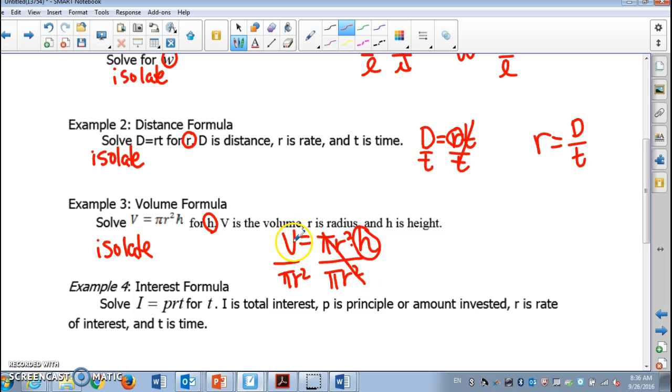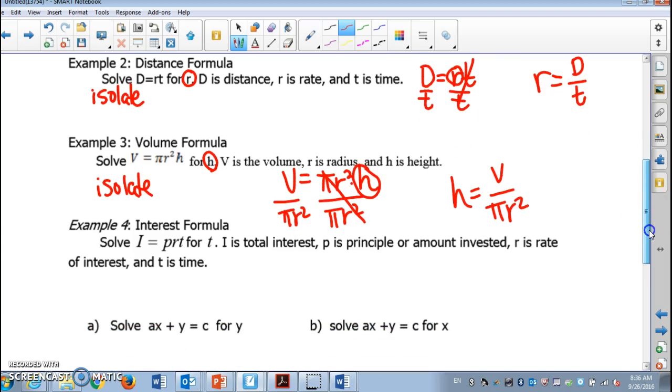Can we simplify V over pi R square? No, so we just leave it as it is, and it's gonna be H equals V over pi R square. Easy?